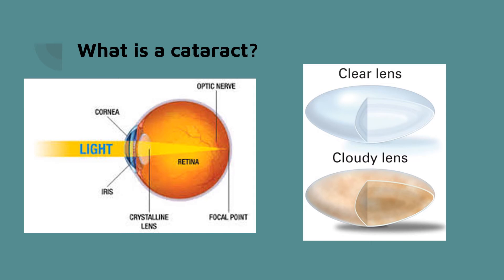This lens can change its shape in an instant to view objects close to us and far away so that we may optimally see our surroundings. As we get older, our lens loses the ability to change its shape and it becomes harder and cloudier. Originally, our lens is clear like glass. When we develop a cataract, the lens starts to change color and develops gunk in it that makes it hard to see.